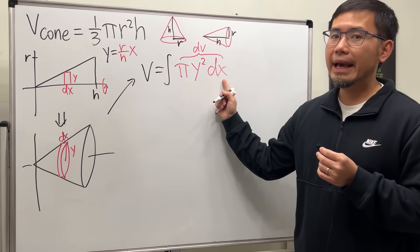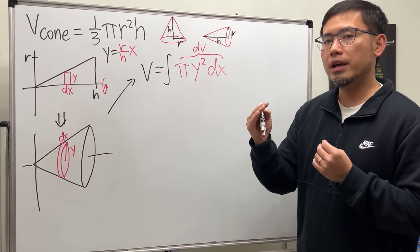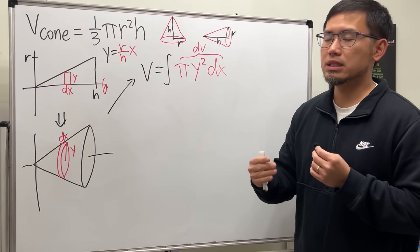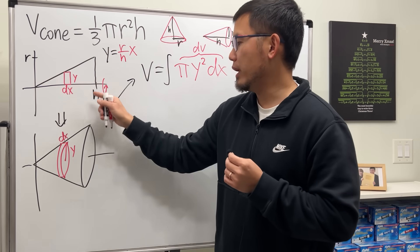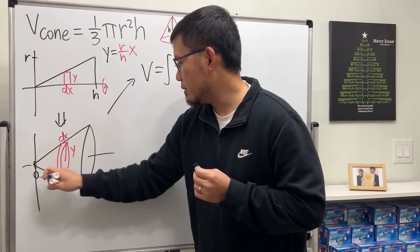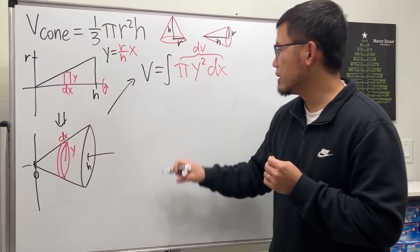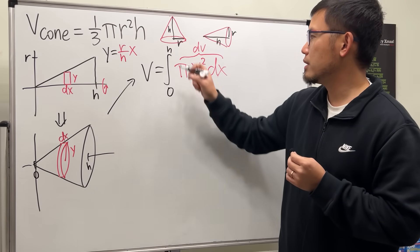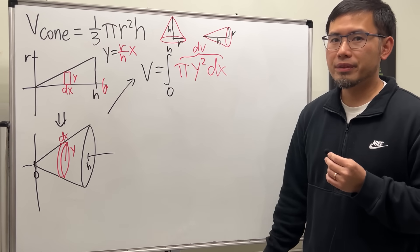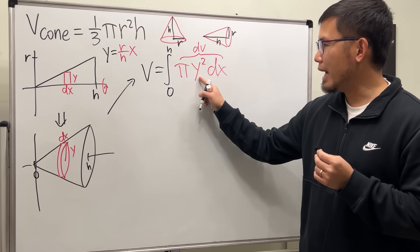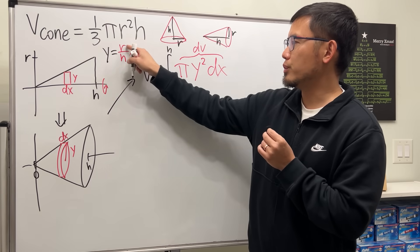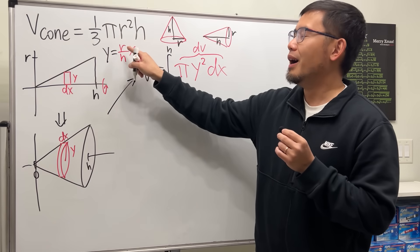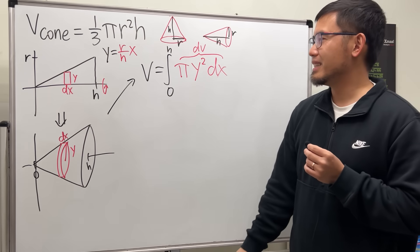Now we are in the x world. So we have to know x goes from what to what. Look at the x-axis. It goes from 0 to h. So 0 to h. That's pretty much the setup. Except what? y is not allowed in the x world. But it's okay. Because we know y is equal to r over h times x.